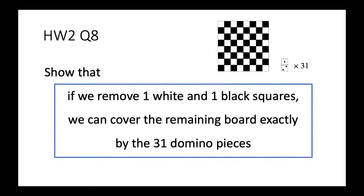This problem can be solved by proof by cases. The most naive method considers all different combinations of two squares being removed, but that would be a huge proof. The key question is whether we can simplify the number of cases. In fact, there is a super clever method that handles everything in just one case, which I will show in the next slide.